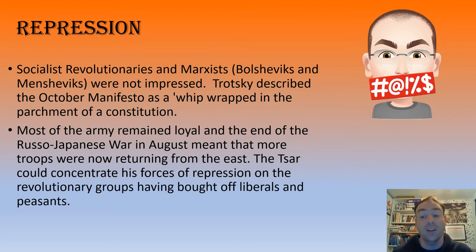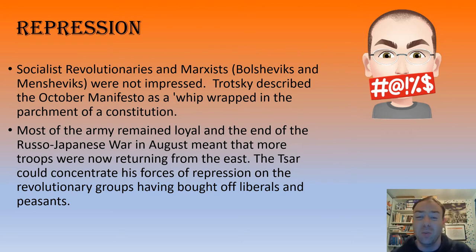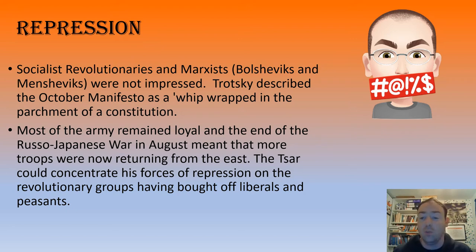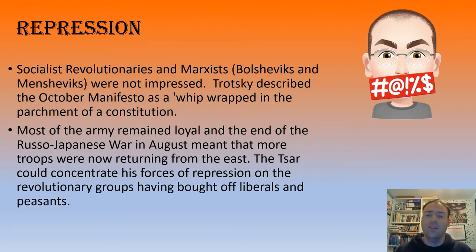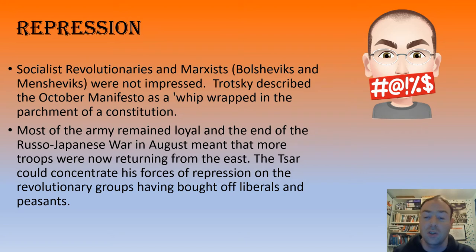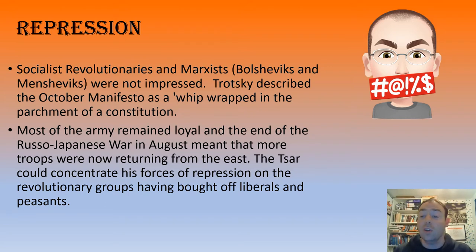There was still a need for repression because some groups were not going to be bought off by these concessions. The Social Revolutionaries, who mainly worked with the peasantry, and the Marxists - the SDs, made up of Bolsheviks and Mensheviks after their 1903 split - were not impressed. Trotsky, a leading revolutionary, described the October Manifesto as 'a whip wrapped in the parchment of a constitution,' and those revolutionary groups, wanting a full revolution, were going to keep on going.